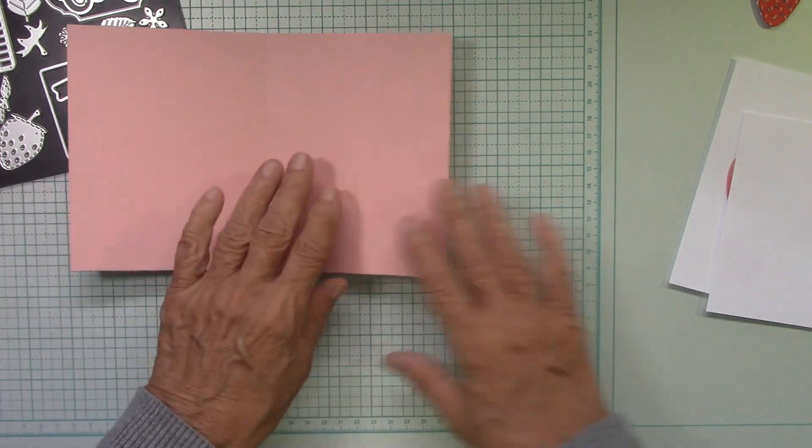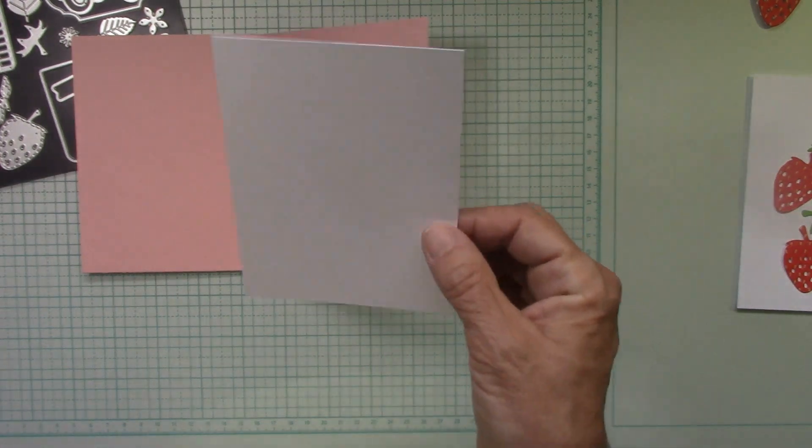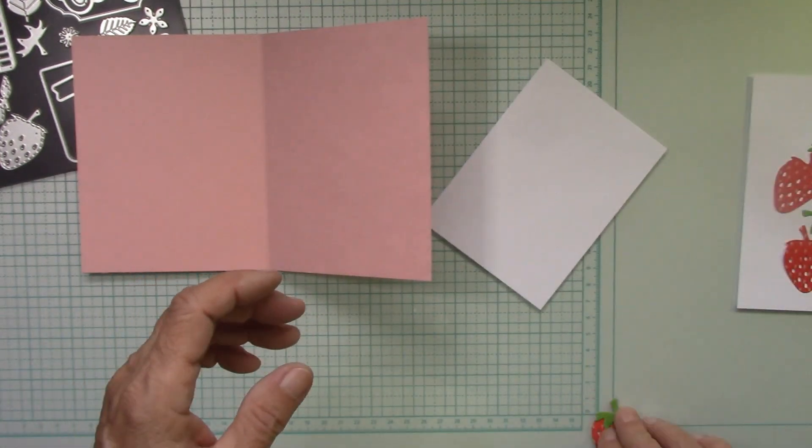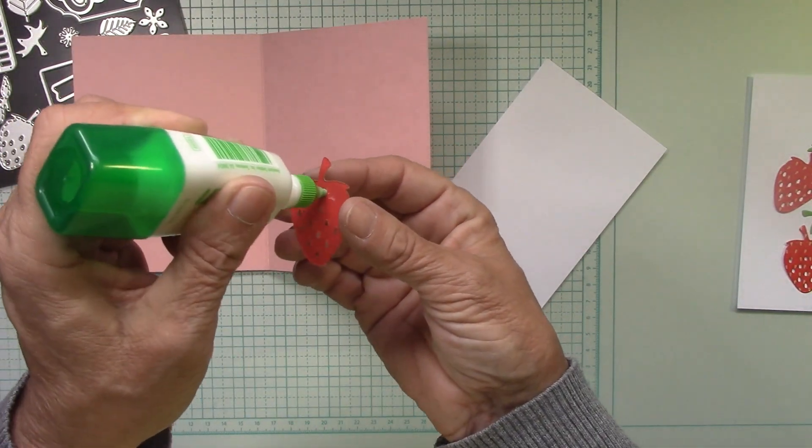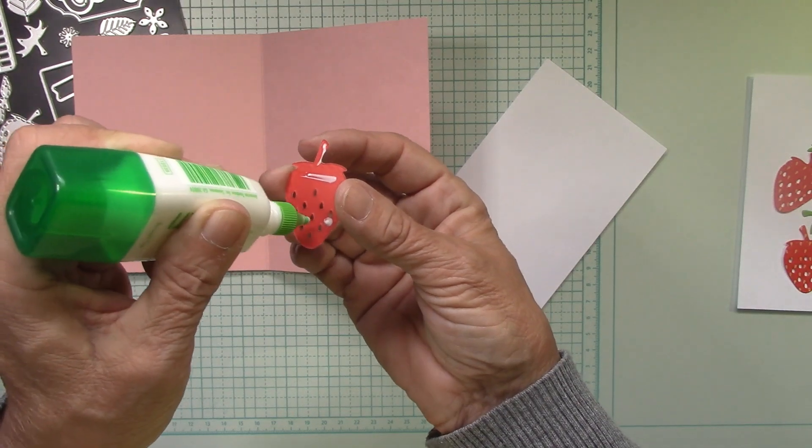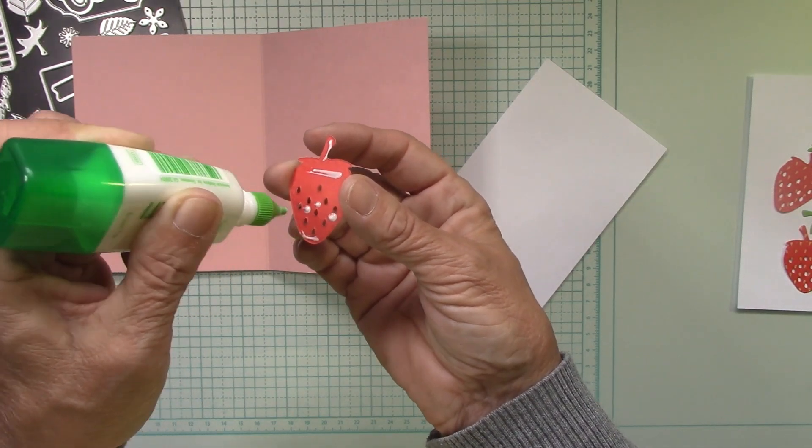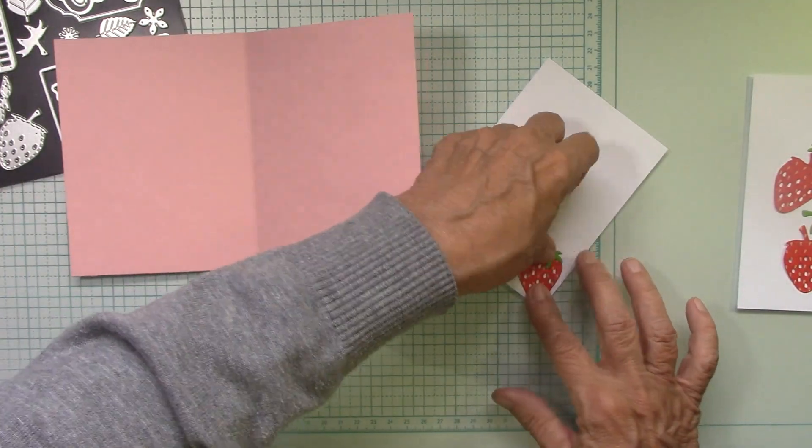The inside of the card is a piece of Neenah white cardstock, four and three quarter by three and a half. And I've already got my strawberry completed for the inside too. It's all about the strawberries. I have one more bowl of strawberries left in the fridge. They were so good.